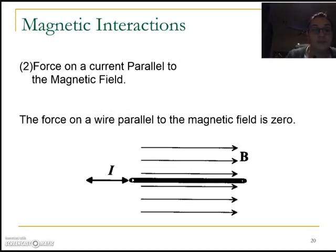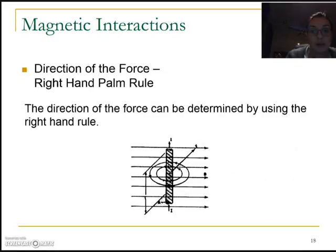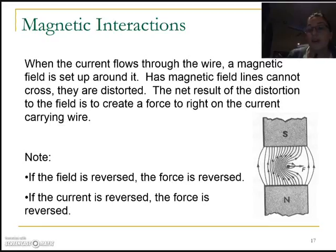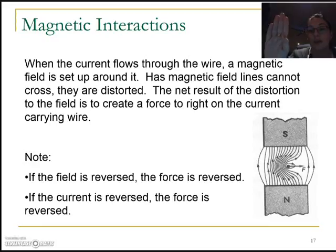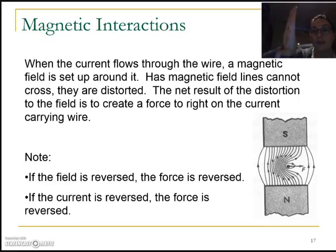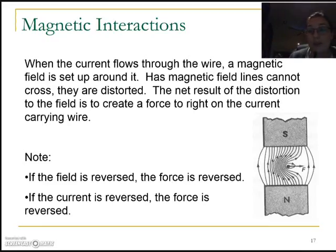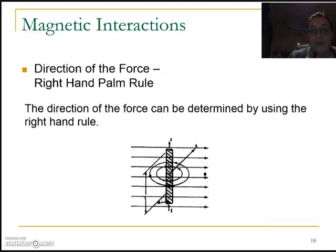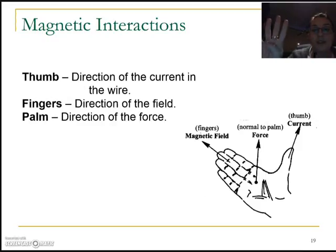Let's see what it actually looks like going back to this example. If we have our north-south magnet, the field is going to be going that way, and if we have our current going into the page, then the force is going to be going to the right, which matches the way the picture shows the wire moving. So to remember: magnetic field goes with your fingers, current with your thumb, and the resultant force comes out from your palm.